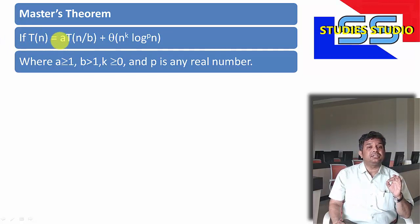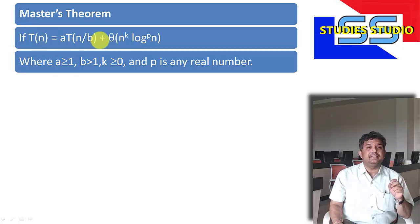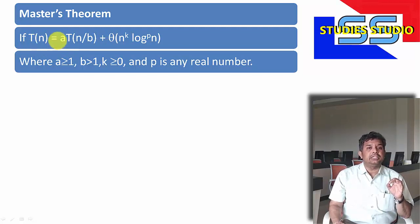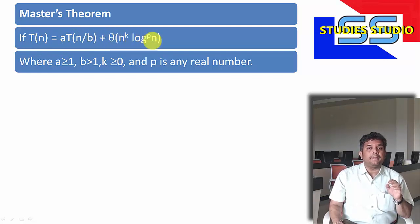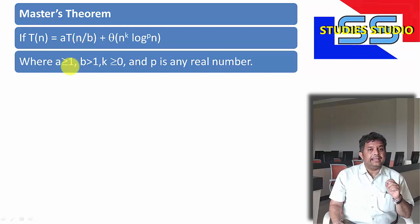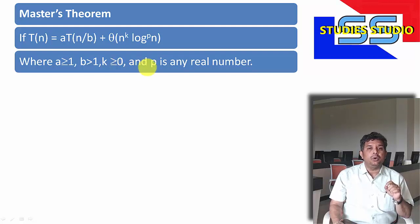Basically, the Master's Theorem goes like this. If the recursive function is in this form — T(n) = a·T(n/b) + Θ(n^k · log^p n) — where a is greater than or equal to 1, b is greater than or equal to 1, k is greater than or equal to 0, and p is any real number, then there are some conditions.